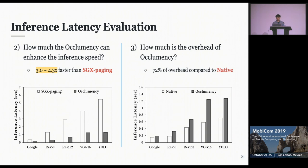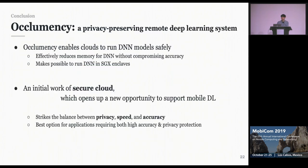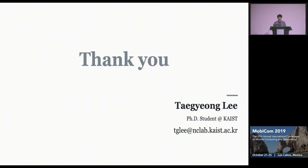Our system effectively reduced the memory for DNN to fit into the SGX enclave, and thus it can boost up the inference speed inside the enclaves. To conclude, we propose Occlumency, a privacy-preserving remote deep learning system. Occlumency enables clouds to safely run the DNN model inside. It effectively reduces the memory for the DNN without compromising any accuracy, and also makes it possible to run the DNN inside the SGX enclave. This is an initial work of the Secure Cloud which will open up a new opportunity to support mobile deep learning. It constructs a balance between privacy, speed, and accuracy, and will be the best option for applications which require both high accuracy and privacy protection. Thank you for listening.